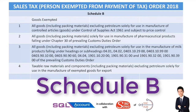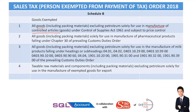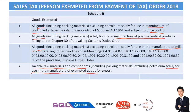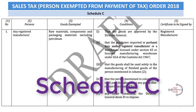Schedule B talks about goods exempted. Goods used in the manufacture of controlled articles or controlled goods under price control are not subject to sales tax. All goods used in the manufacture of pharmaceutical products are not subject to sales tax. All goods used in the manufacture of milk, and taxable raw materials and components solely used in the manufacture of export goods, are also not subject to sales tax.